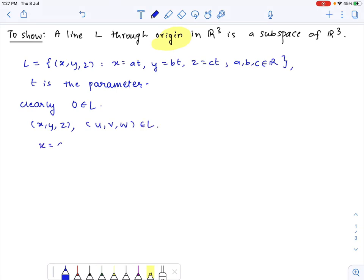So suppose x equals at, y equals bt and z equals ct and we have u equals dt, v equals et and w equals ft where a, b, c, d, e and f are real numbers.